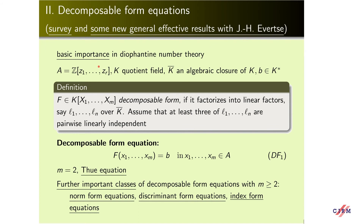The second part of my talk is devoted to new results obtained together with Evertse. Decomposable form equations are of basic importance in algebraic number theory. Let A, K, and K-bar be as above. By definition, a polynomial from this polynomial ring is called a decomposable form if it factorizes into linear factors L₁,...,L_N over K-bar, and we assume that at least three of them are pairwise linearly independent. An equation of this form is called a decomposable form equation over A. For M=2, this is just a Thue equation. Further important classes include norm form equations, discriminant form equations, and index form equations.